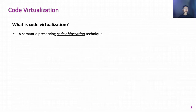Before talking about the Chosen Instruction Attack, let's figure out what is code virtualization. Code virtualization is a semantic-preserving code obfuscation technique. It is different from system virtualization, such as VMware.